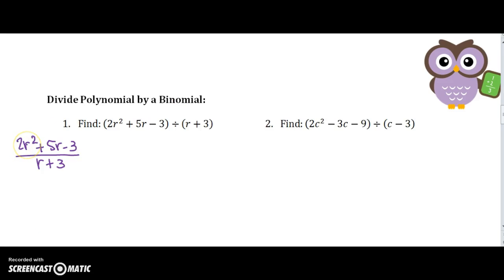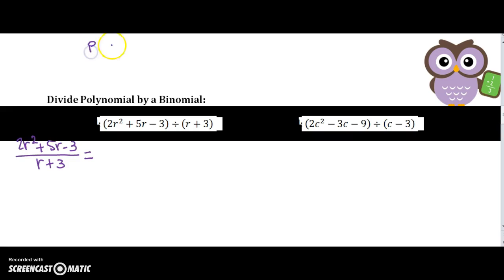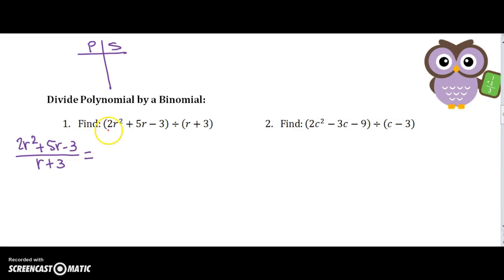So when we have 2r squared plus 5r minus 3 over r plus 3, the first thing I hope instinctively you want to do is to factor the top. But we have a number in front of our 2r squared, so we're going to have to go back and search our memory about product sum. So 2 times negative 3 is negative 6. That's the product we want. And the sum needs to be a positive 5. So we are going to do regrouping. So we have 2r squared.